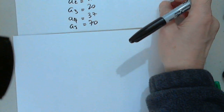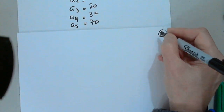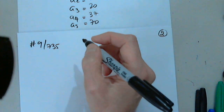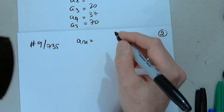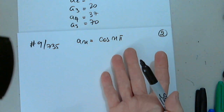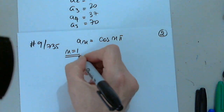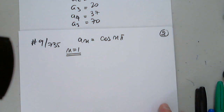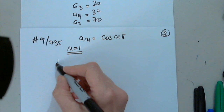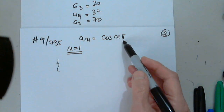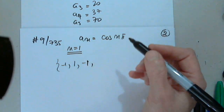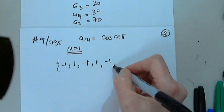Let's look at another example — number 9 on the same page 735. We're given a sub n equals cosine(nπ). Since n is not specified, we normally start at 1. When n equals 1, we have negative 1. When n equals 2, we have 1. When n equals 3, we have negative 1, and so on and so forth.